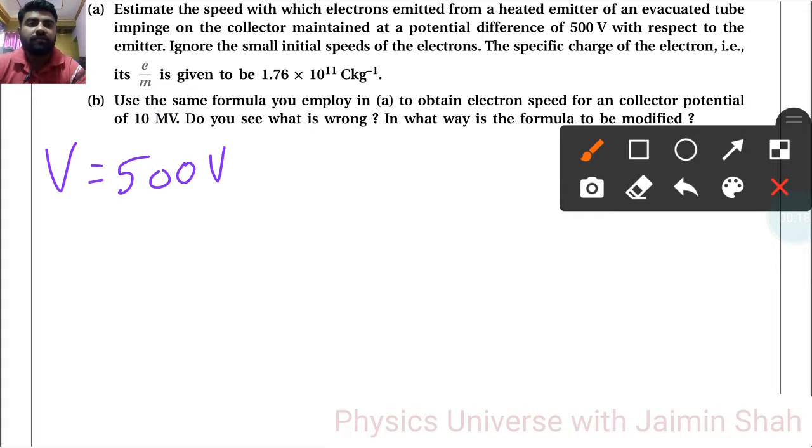The specific charge of electron E by m is equal to 1.76 into 10 raised to 11. Use the same formula. So, first of all, we have to estimate the speed V.